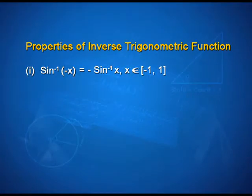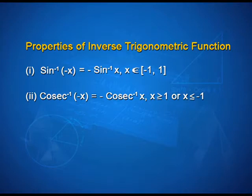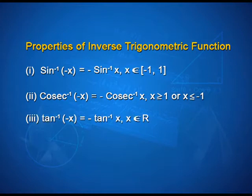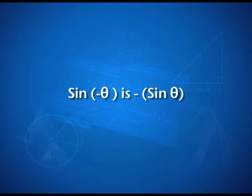The second property says that sin⁻¹(-x) = -sin⁻¹(x), where x belongs to the closed interval [-1, 1]. cosec⁻¹(-x) = -cosec⁻¹(x), where x ≥ 1 or x ≤ -1. tan⁻¹(-x) = -tan⁻¹(x), where x belongs to real numbers. If you are with me, you would realize there is a relation from grade 11 — sin(-θ) = -sin(θ) — so you can see some likeness there. I would advise you to try out the proof so that these properties stay with you longer.